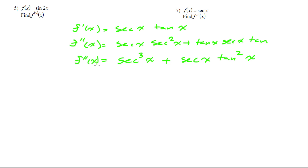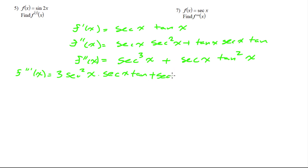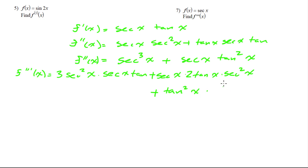That's still the second derivative, and now we need to take the third. This has two terms. For the derivative of secant cubed we use the chain rule — the three comes out. Then we apply the product rule to secant x tangent squared x: the derivative of tangent squared is 2 tangent x times secant squared, plus tangent squared times the derivative of secant, which is secant x tangent x.